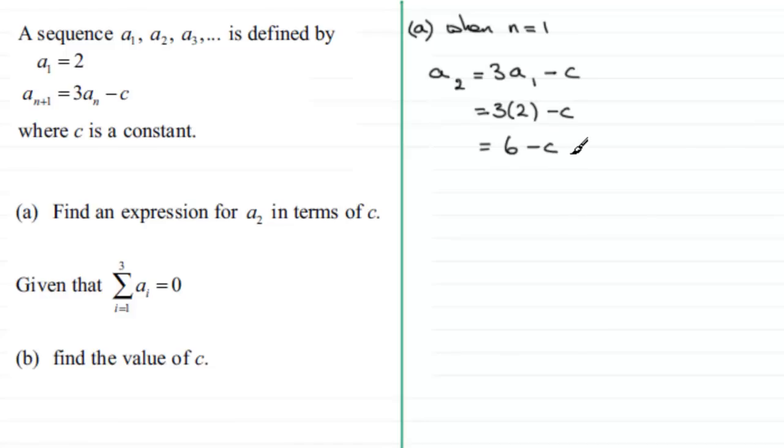Now for part (b), we're told that the summation of the first three terms a₁ + a₂ + a₃ equals 0. We're given that Σ(i=1 to 3) aᵢ = 0, which means a₁ + a₂ + a₃ = 0.